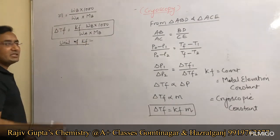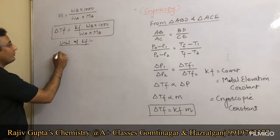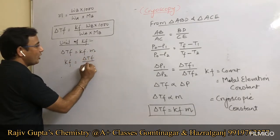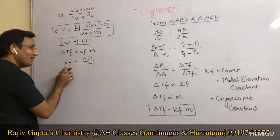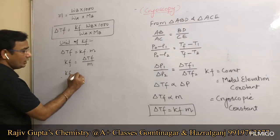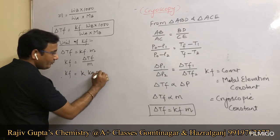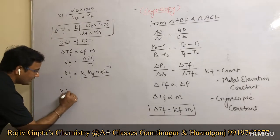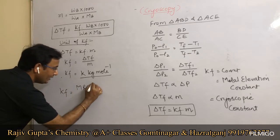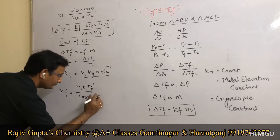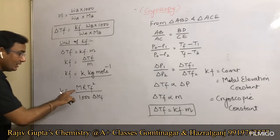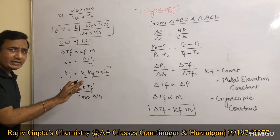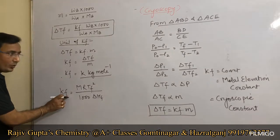The unit of ΔTf is temperature — degree Celsius or Kelvin. Since Kf = ΔTf / m, the unit of Kf is the same as Kb: Kelvin·kg per mol. The formula for Kf analogous to Kb is: Kf = Ma·R·Tf² / (1000 × ΔHf), where Ma is molecular mass of solvent, R is gas constant, and Tf is the freezing point.